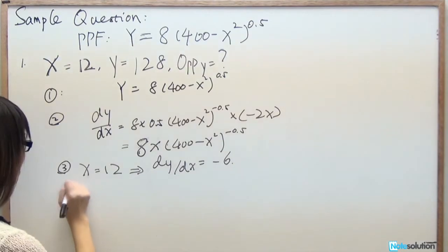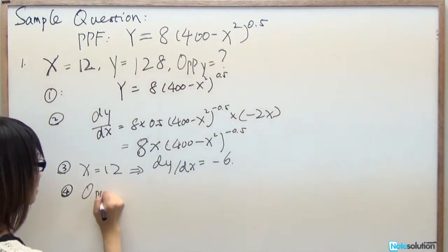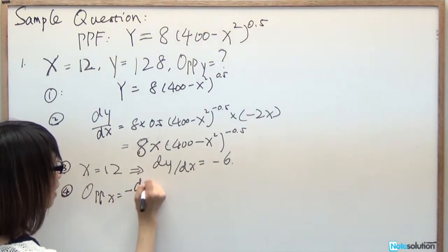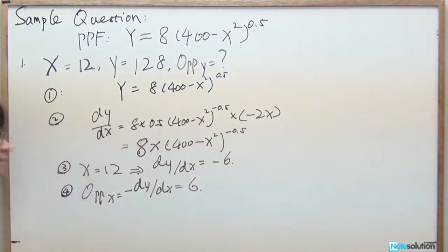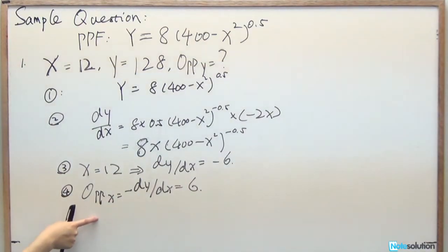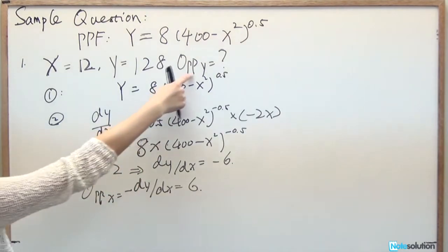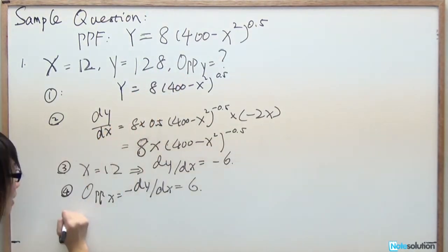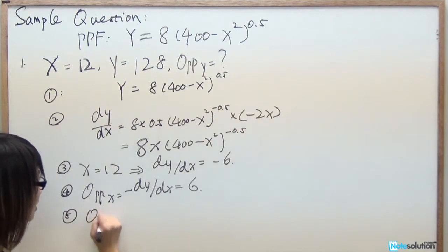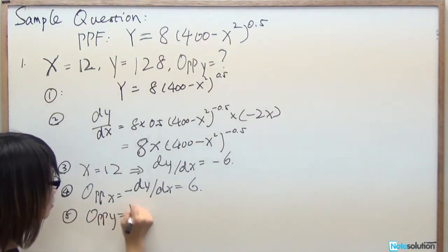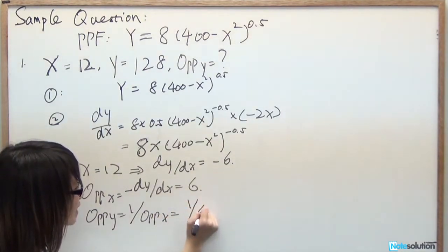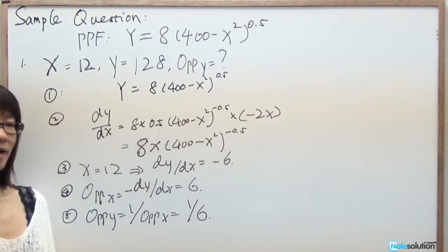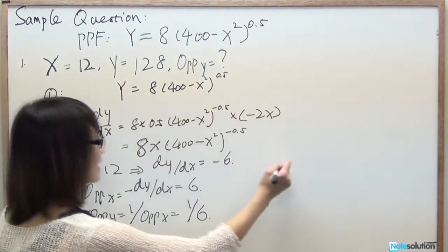Since opportunity cost of X equals negative dY/dX, the opportunity cost of X is 6. The question asks for the opportunity cost of Y, which equals 1 over the opportunity cost of X, so it equals 1/6. The answer is D.